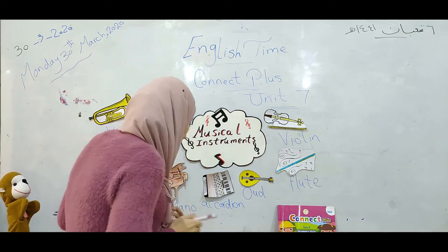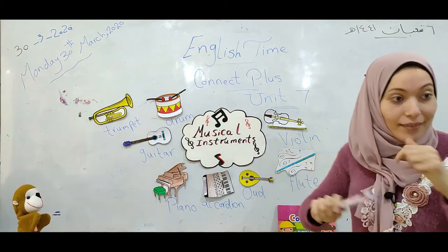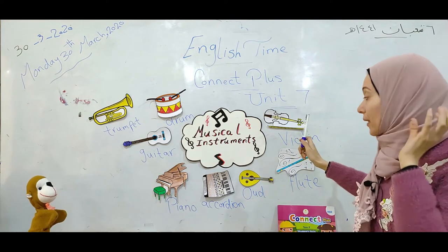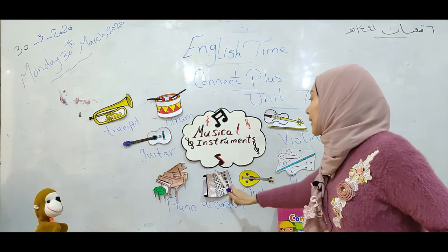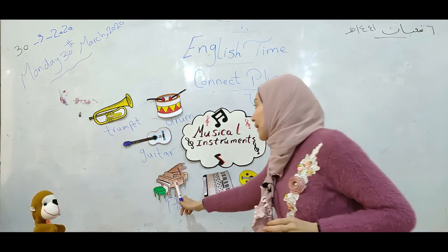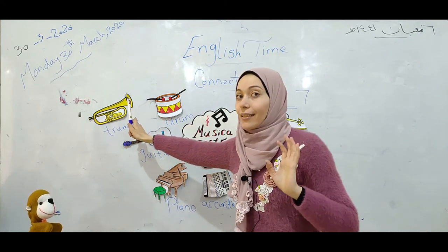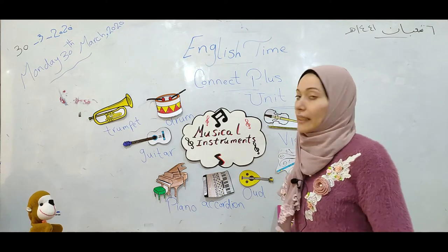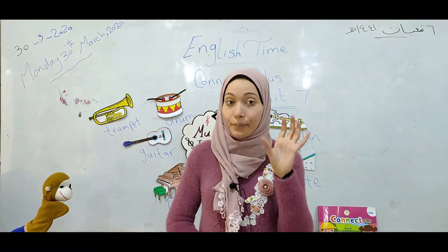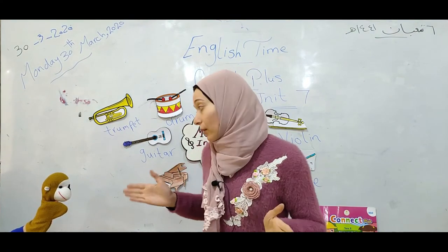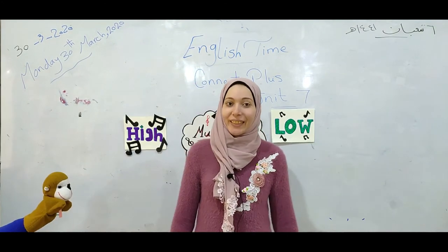These are all our musical instruments. Let's repeat after me to make sure we remember them: it's a violin, it's a flute, it's an oud, it's an accordion, it's a piano, it's a guitar, it's a drum, it's a trumpet. I can play all of these musical instruments! Let's take a simple break because the monkey wants to dance again. Let's dance together.